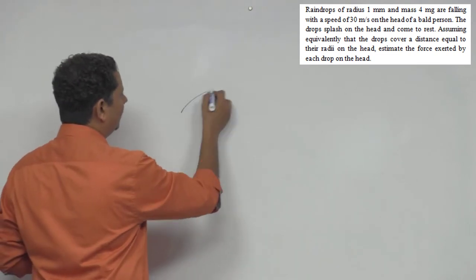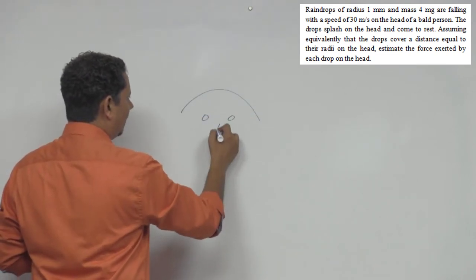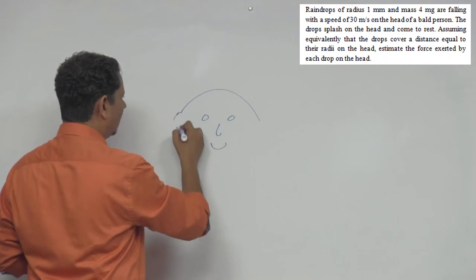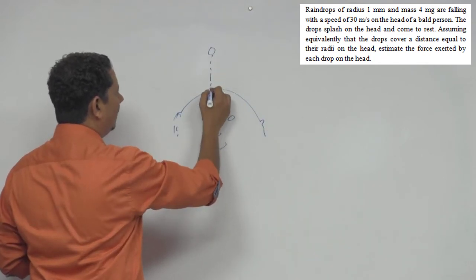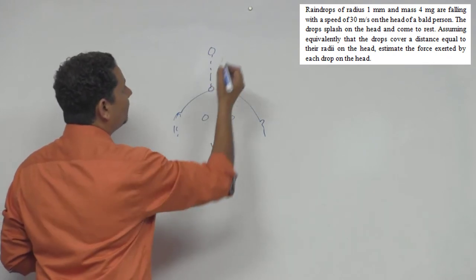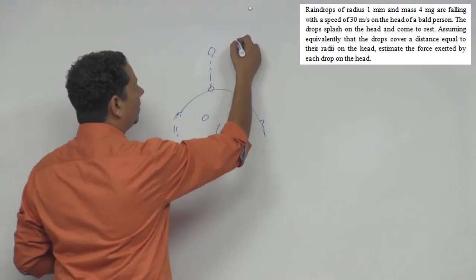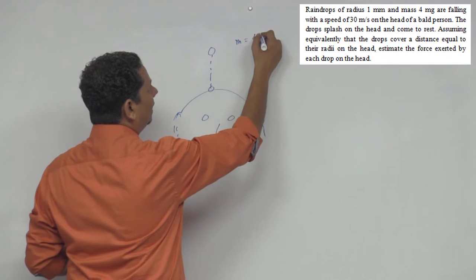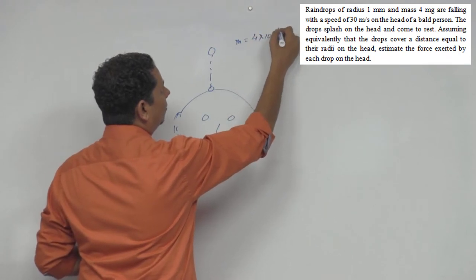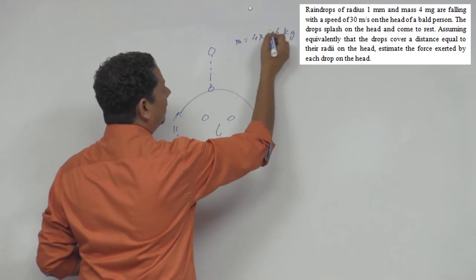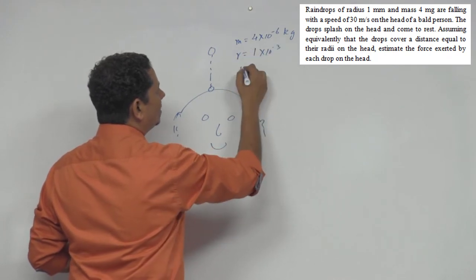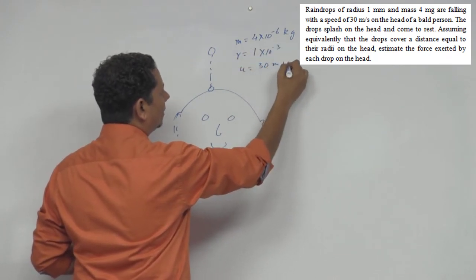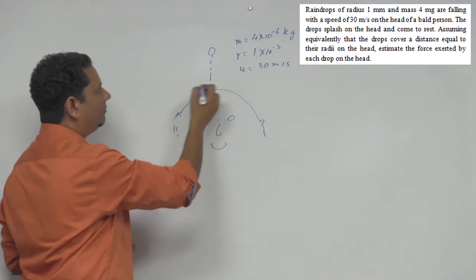Here is a bald person, and here are the raindrops. Mass is 4 milligram, so that's 10 to the power minus 6 kilogram, radius is 1 mm, and speed is 30 meter per second. Now when these drops fall on the head, they come to rest.